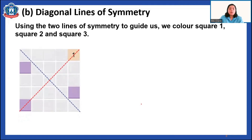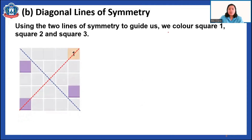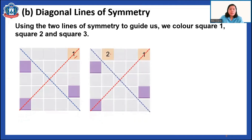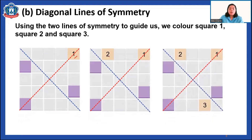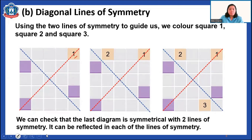Using the two lines of symmetry to guide us, we colored square one, square two, and square three. As you can see, our painted squares are all symmetrical according to that diagonal line of symmetry. We can check that the diagram is symmetrical with two lines of symmetry — it can reflect in each of the lines of symmetry.